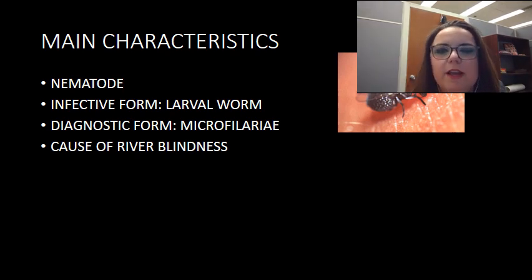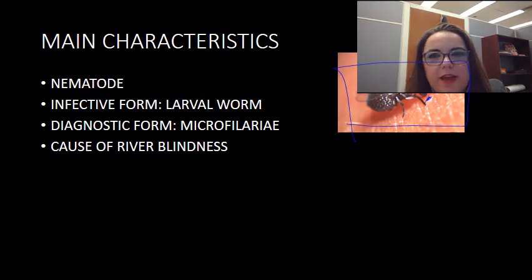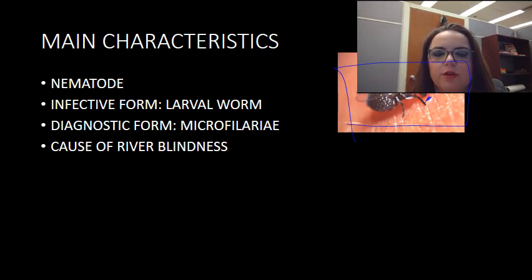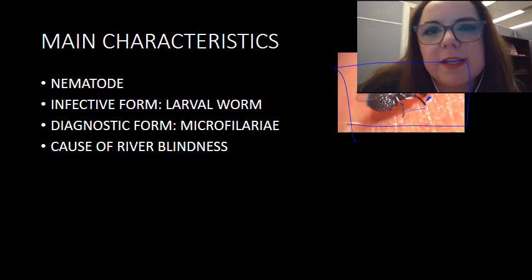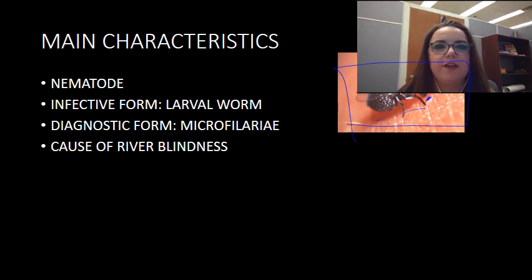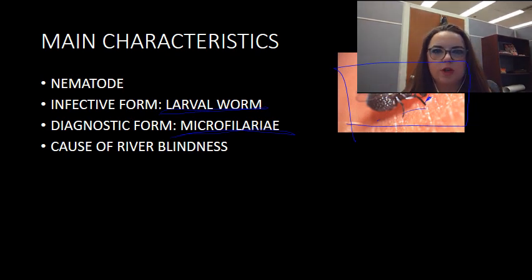The vector for this is the black fly. The black fly will land on the skin and bite it, and there is actually a life cycle within the black fly as well for this parasite — that's how you know it's truly vector-borne, an arthropod-borne illness. As with all parasitic infections, you absolutely have to know the infective and the diagnostic form. The infective form is the larval worm, and the diagnostic form is the microfilaria.